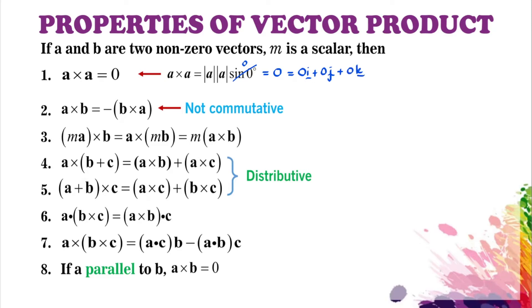Number two: A cross B equals negative B cross A, where we know that vector product is not commutative as direction is important in vector product.